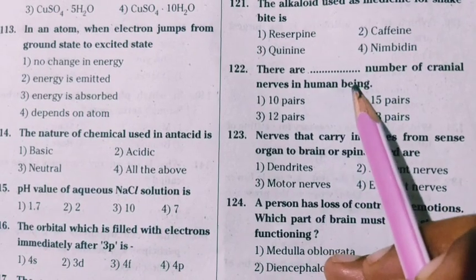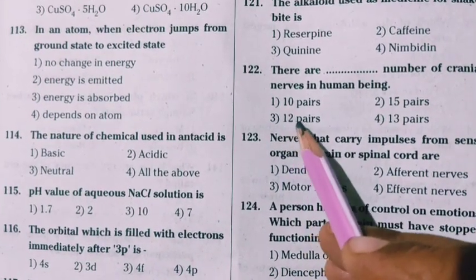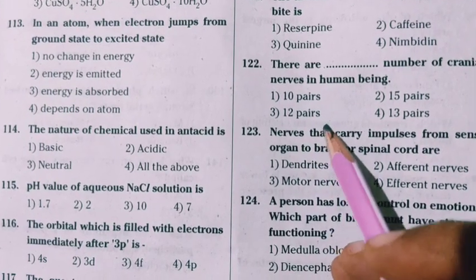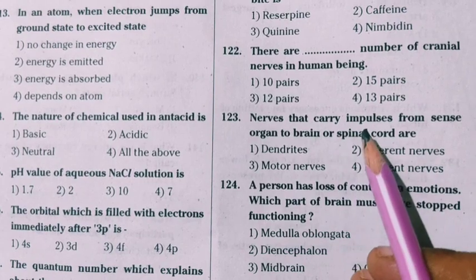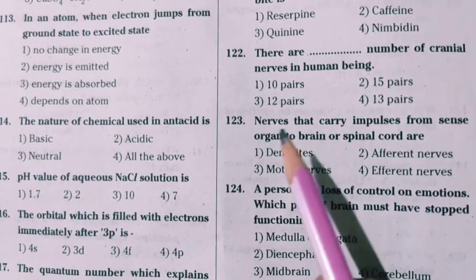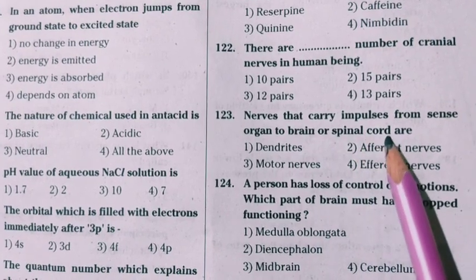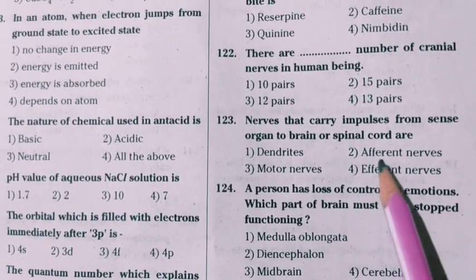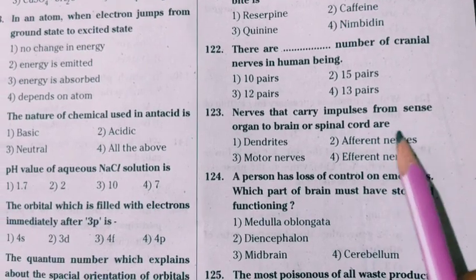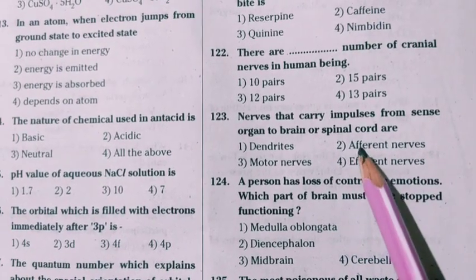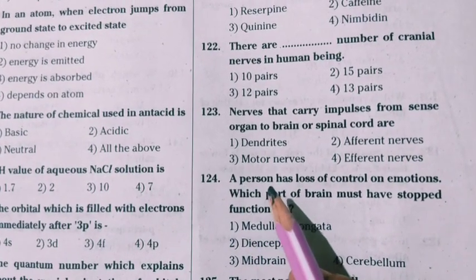Next question: there are how many cranial nerves in human beings? In human beings the number of cranial nerves are 12 pairs. Next question: nerves that carry impulses from sense organs to the brain or spinal cord are afferent nerves.